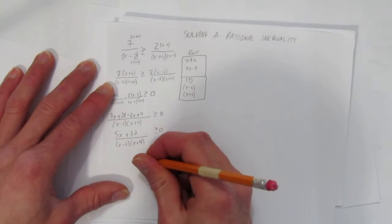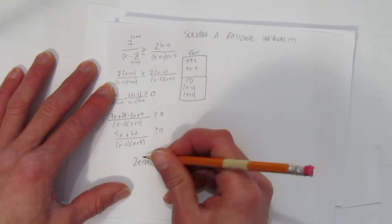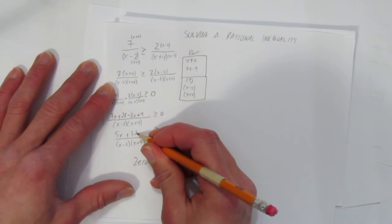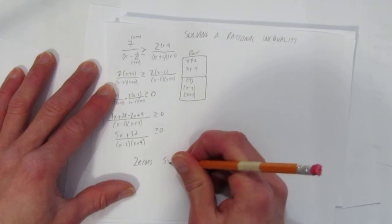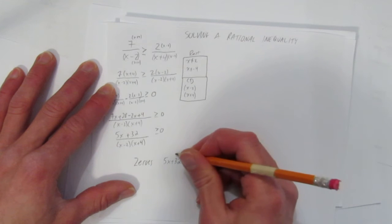What we need to do now is identify what are the zeros. The zeros in this case, or there's only one, is what makes the numerator zero. That is, 5x plus 32 has to equal zero for it to be a zero. Now let's solve.